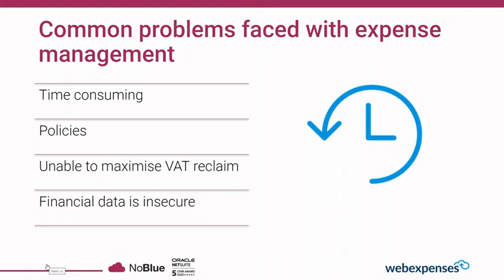The second problem is how difficult it is to enforce travel and expense policy when there's no easy way to notify employees of exact policy or prevent out-of-policy submissions. Web Expenses gives finance teams that control back — travel and expense spend is enforced through company policy within the system. Soft or hard rules can be configured, meaning users are notified when their claim is out of policy, or physically cannot submit until they're within policy, or until a receipt is attached.